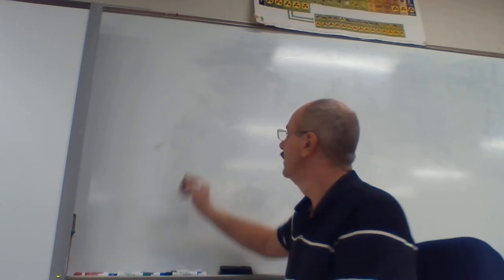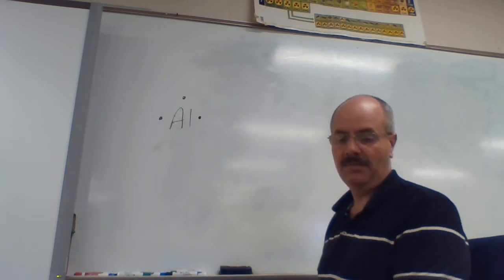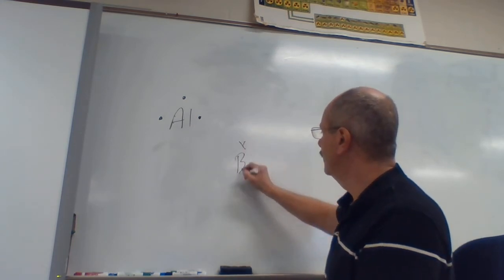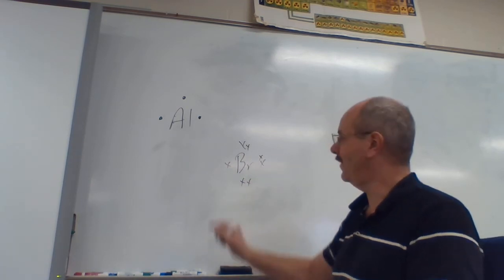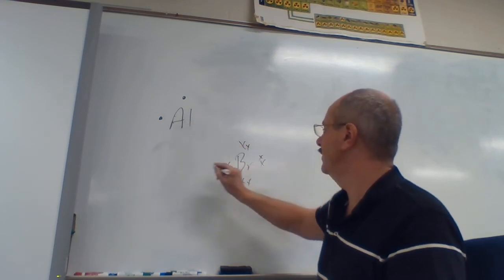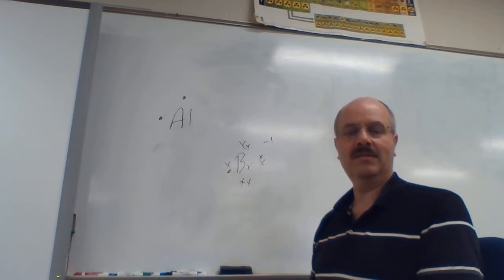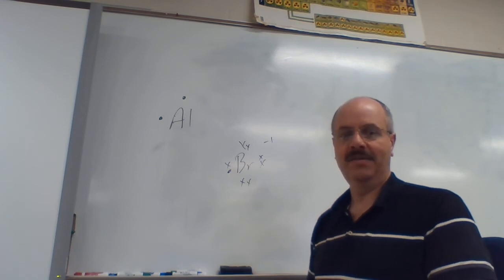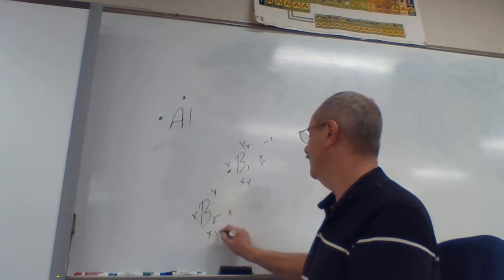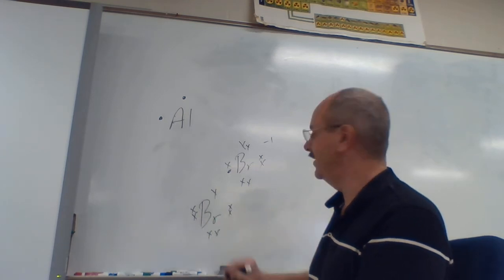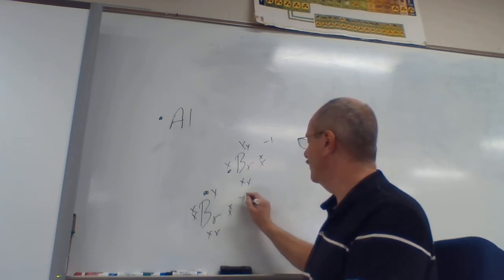Let's do another example: aluminum and bromine. Al has three valence electrons — one, two, three. Br has seven: one, two, three, four, five, six, seven. Does that bromine have an open spot? Yes, just like chlorine did. So it can take one of aluminum's electrons and fill it in, making that bromine happy with a negative one charge. But aluminum up there is still not happy — he's still got some other electrons hanging out, so let's take another Br: one, two, three, four, five, six, seven. That one has an empty spot too, so we take one from aluminum and fill it in — negative one charge.